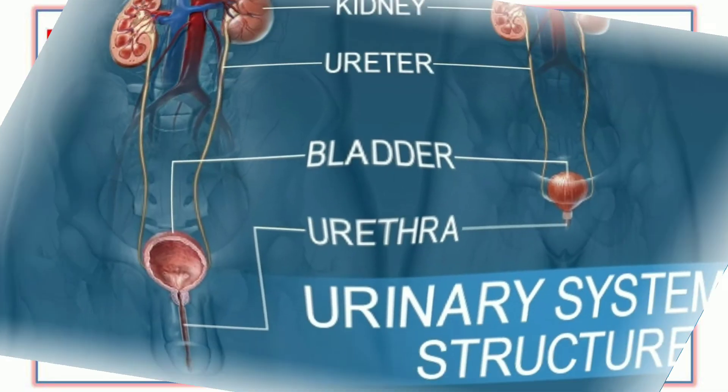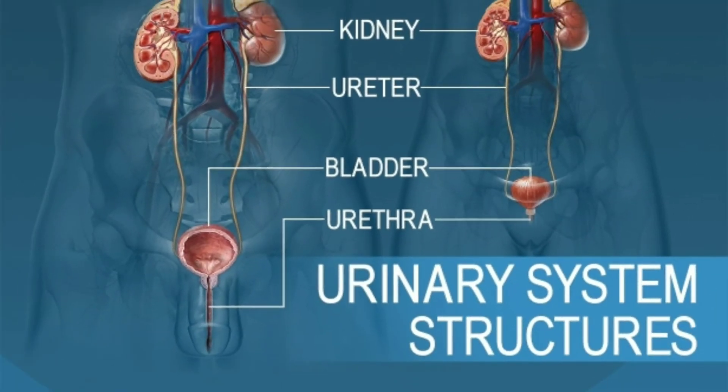اب ہم پڑھتے ہیں اس کی occurrence — زیادہ تر جو stones ہیں یہ kidney میں بنتے ہیں، پھر یہ travel کر جاتے ہیں ureter اور پھر urinary bladder میں۔